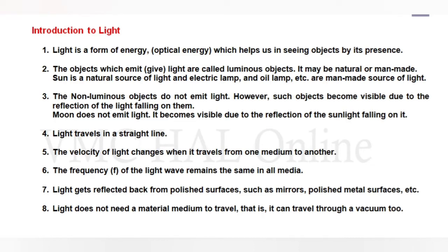The objects which themselves emit light are called luminous objects. For example, sun, electric lamp, oil lamp — these may be natural or man-made. Sun is the example of a natural luminous source of light, while electric lamp and oil lamp are man-made sources of light.